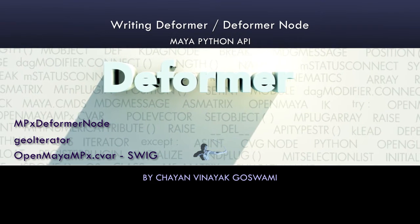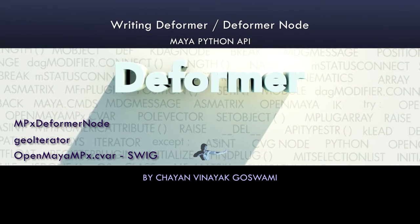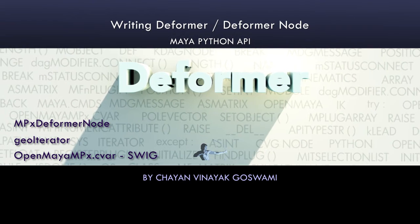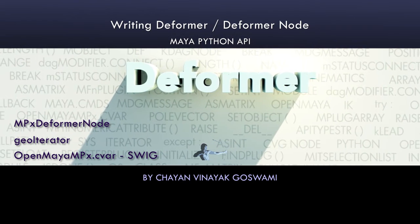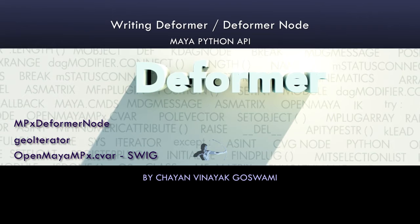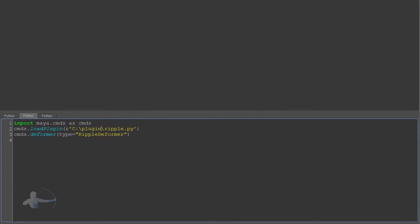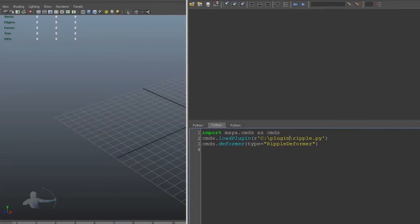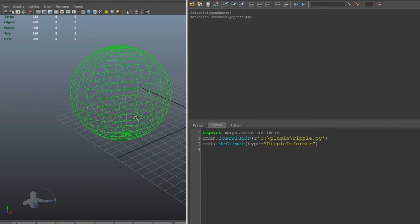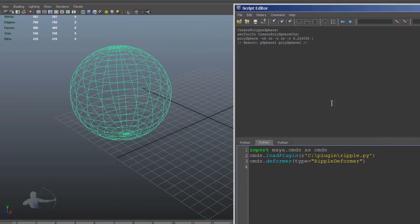In the previous video, we understood what a deformer node is and what attributes and functions come with it. In this chapter, we will write a ripple deformer. Before we start writing the code, I will show you what this ripple deformer looks like, how we create a deformer in our Maya scene, and what its functionality is.